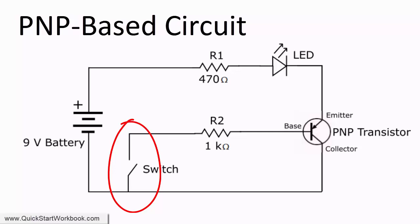With a PNP transistor, current flows out of the base by giving it a more negative voltage than is supplied to the emitter.